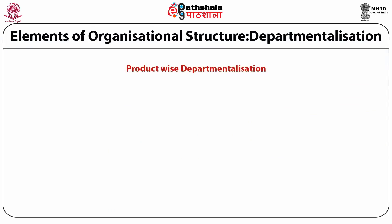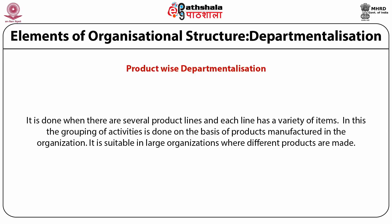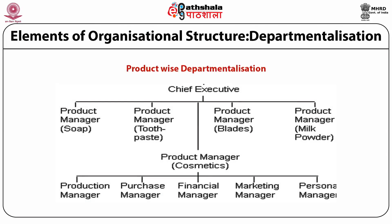Product-wise departmentalization is done when there are several product lines and each line has a variety of items. The grouping of activities is done on the basis of products manufactured in the organization. This is suitable in large organizations where different products are made. For example, a product manager dealing with the soap division, another with toothpaste, another with blades, and another with milk powder.